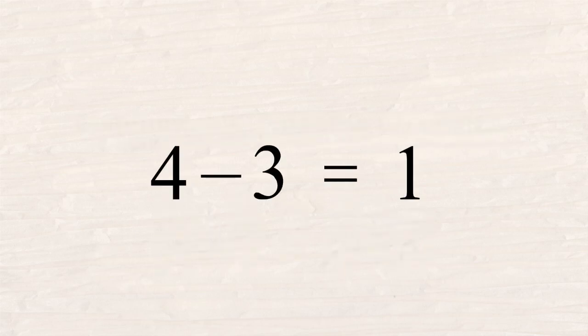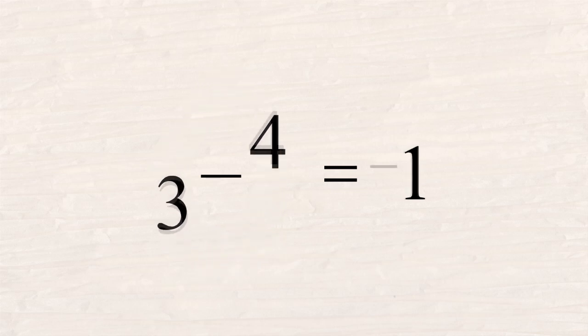Although addition is a commutative operation, subtraction is not. For example, four minus three is one. However, if you switch the order of the three and the four, the result will not be the same. Three minus four is negative one.